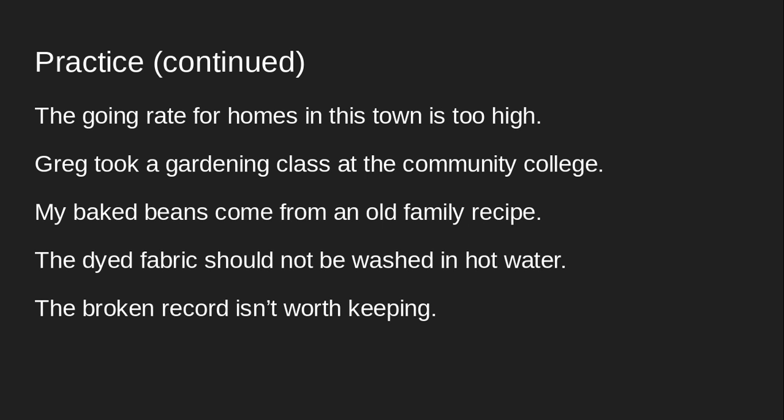Number one, we should have 'going,' modifying 'rate,' because you can go places, but it's modifying 'rate' here, telling us about how the home's rates are at that time. Number two should be 'gardening,' telling us what kind of class we're talking about. Number three, 'baked beans' — you can bake cupcakes, but here we're talking about what kind of beans we have. Number four, 'dyed fabric' — you can dye or change the color of many things, but we're talking specifically about the fabric that has been dyed. Number five, 'broken,' modifying 'records' — you can break things, but we're talking about that record that is broken.